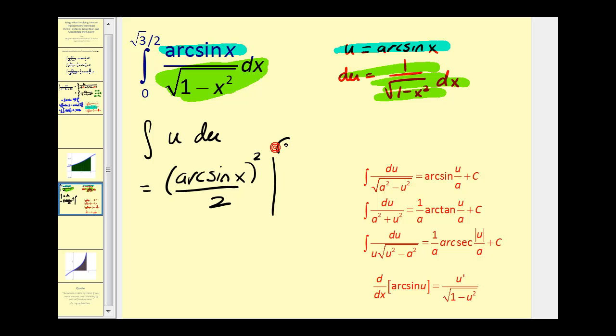Evaluated at square root 3 divided by 2 and 0. So here we'll have arc sine square root 3 over 2 squared divided by 2 minus arc sine 0 squared divided by 2.